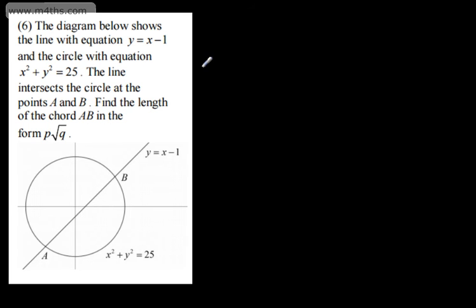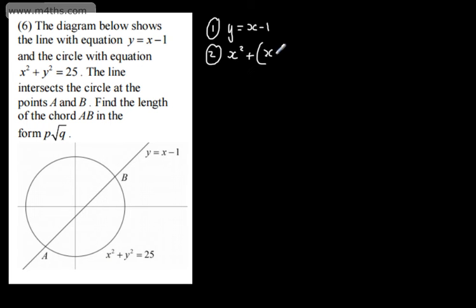So here's A and here's B. We've got y equals x minus 1 and x squared plus y squared is equal to 25. What I'm going to do is solve simultaneously to find the coordinates of A and B and then simply use the distance formula. So we've got equation 1: y is equal to x minus 1. I'm simply going to substitute that in to equation 2. So we're going to have x squared plus, well we have y squared, so I'm going to write my expression as x minus 1 all squared and that is equal to 25. So I've eliminated y by substituting in.